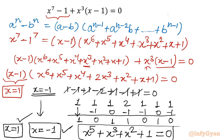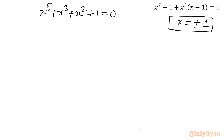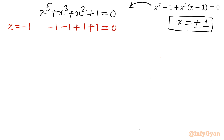Now let us proceed with this equation: x power 5 plus x cube plus x square plus 1 equal to 0. Let us put a few values. Since the polynomial has all positive signs, I should try negative values. Let me put negative 1: minus 1, minus 1, plus 1, plus 1, plus 1 — it is satisfying. That means our third solution is x equal to minus 1.